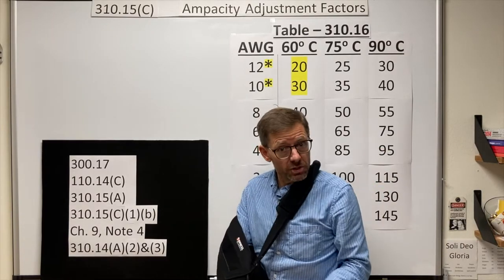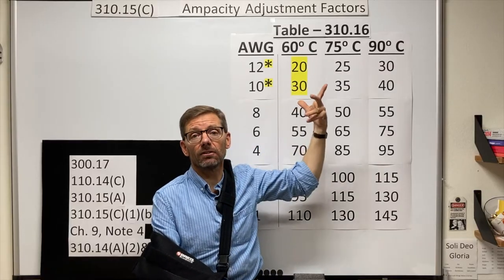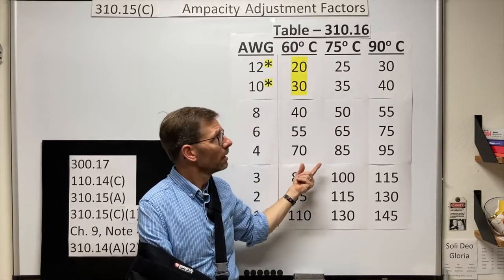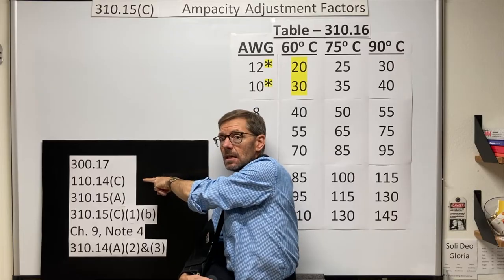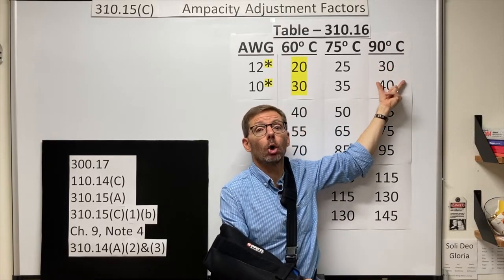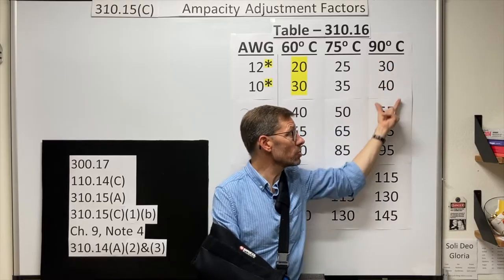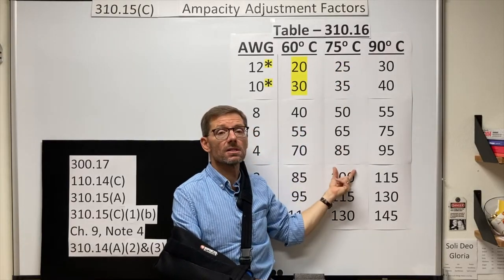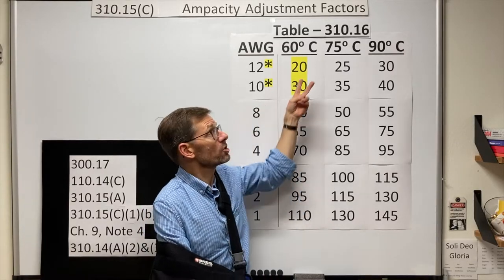110.14(C) also restricts us to the ampacities in the column with the lowest temperature rating of any connected equipment. So we know we're often restricted to these amperages or these, but a lot of our conductors are rated for 90 degrees Celsius. Now it's the second sentence here, or the second paragraph here, that allows us to use the conductor's own ampacity based on its insulation rating. So if I have a 90 degree rated insulation, I can use these ampacities to start my calculation. 75 degree rated conductor, these ampacities to start the calculation, as long as I don't end up higher than what my restrictions are for the connected equipment.